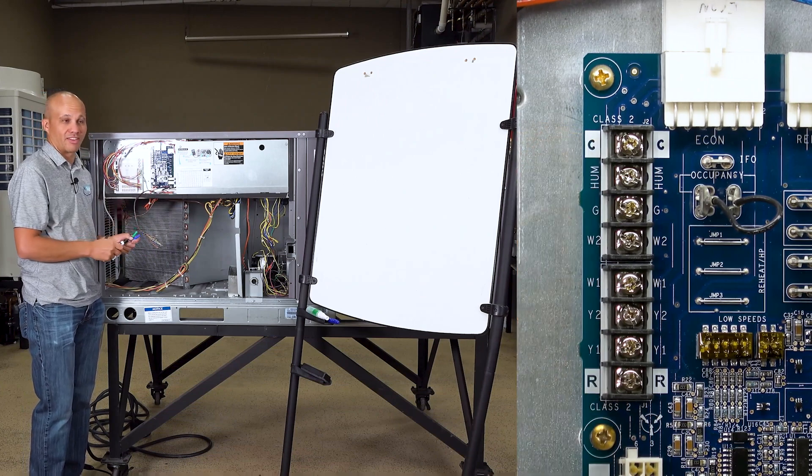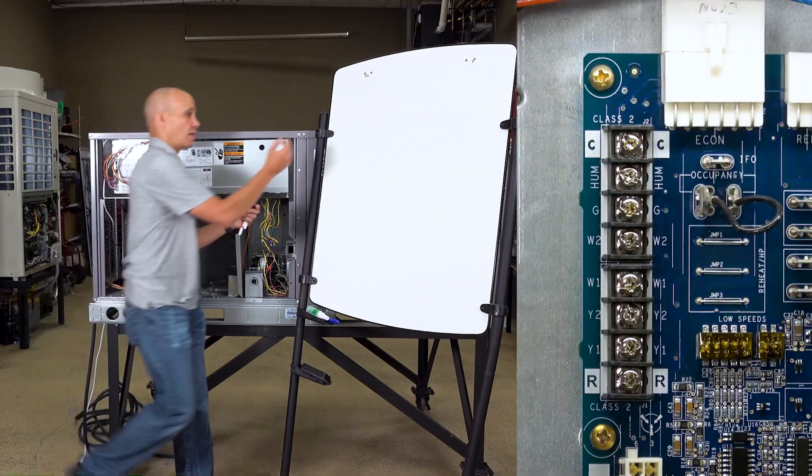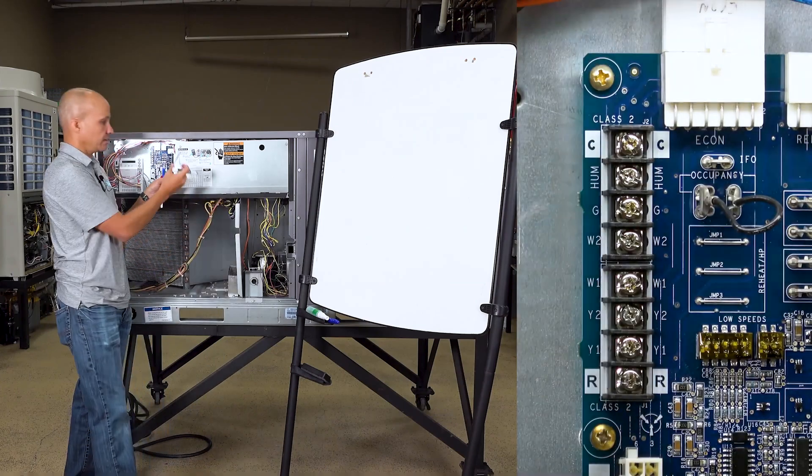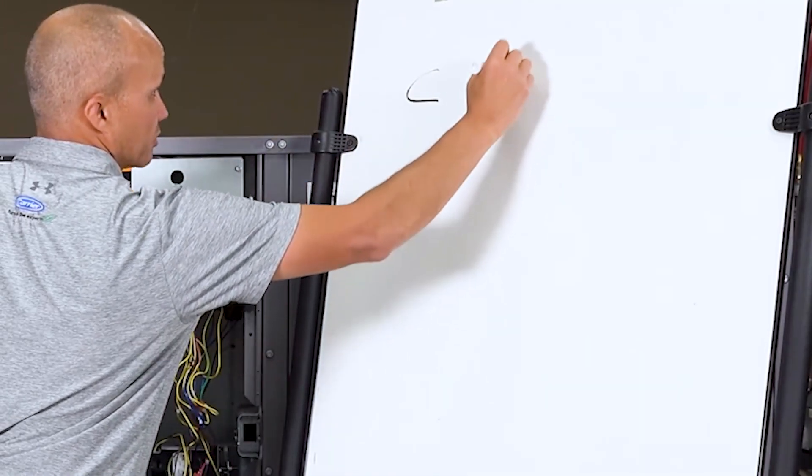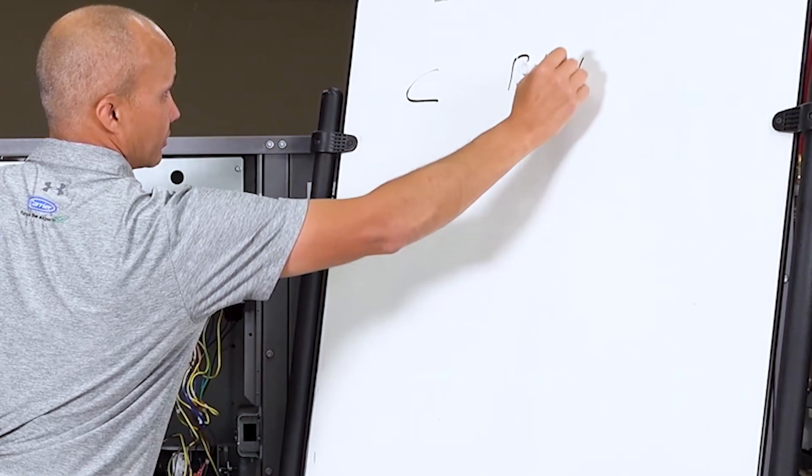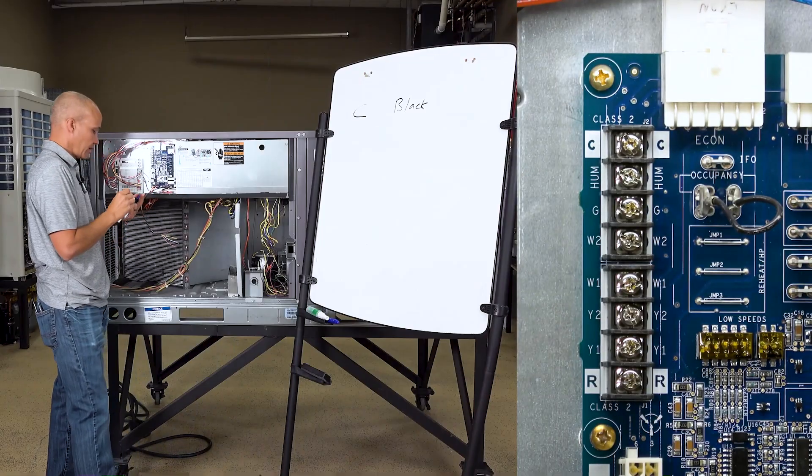Let's go through some of these here. As you can see, the very first one we have on the board is a common. So for our purposes here, for common I'm going to use black. So common is black in this case, so we'll wire that up there.